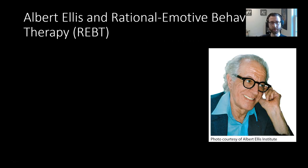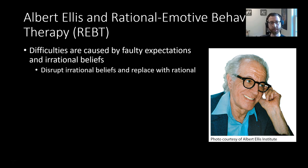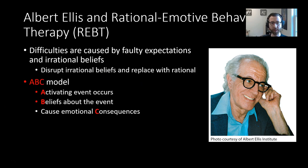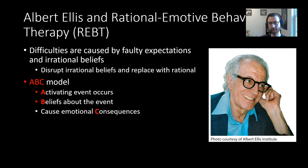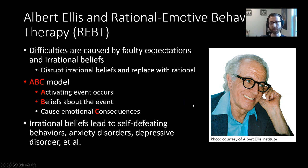Albert Ellis is the pioneer of Rational Emotive Behavior Therapy. The main emphasis is identifying difficulties caused by faulty expectations or irrational beliefs — errors in the way people think about what's expected of them or how they think of themselves. The goal is to disrupt those irrational beliefs and replace them with more rational ones. This relies on the ABC model: A is the activating event, B is the subsequent beliefs about that event, and C is the emotional consequences that follow. Irrational beliefs can lead to self-defeating behaviors and disorders like anxiety and depression.